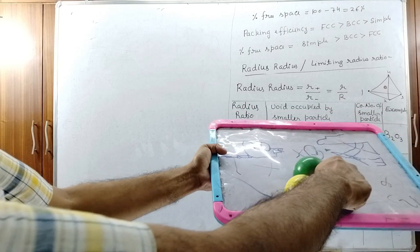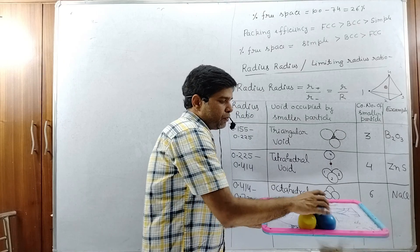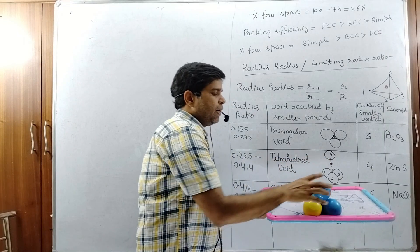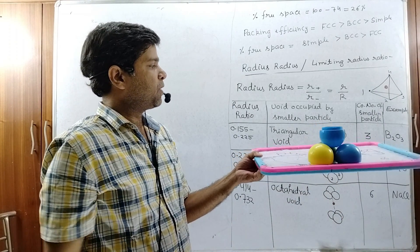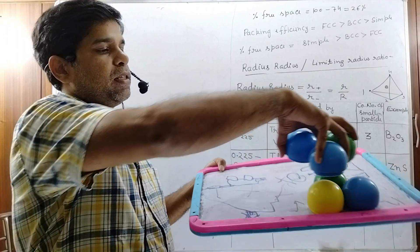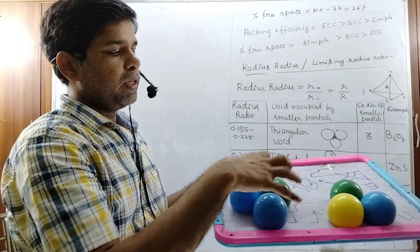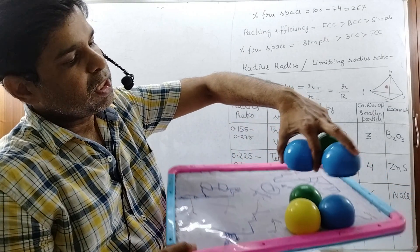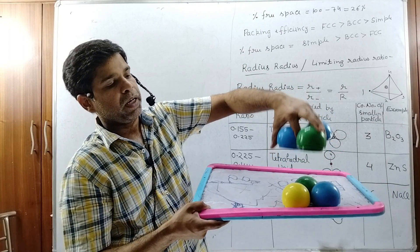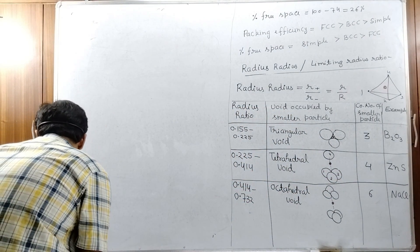Among three particles, the space is the triangular void. When the triangular void of layer one is covered by a particle of the second layer, that vacant space represents the tetrahedral void. When the triangular void of layer one is covered by the triangular void of layer two, and three particles below and three particles above surround a gap, that gap represents the octahedral void.